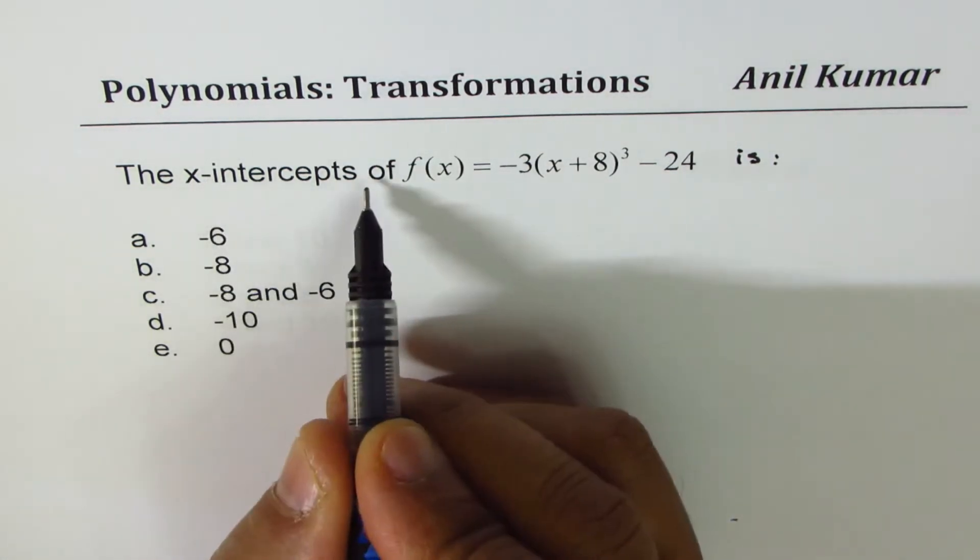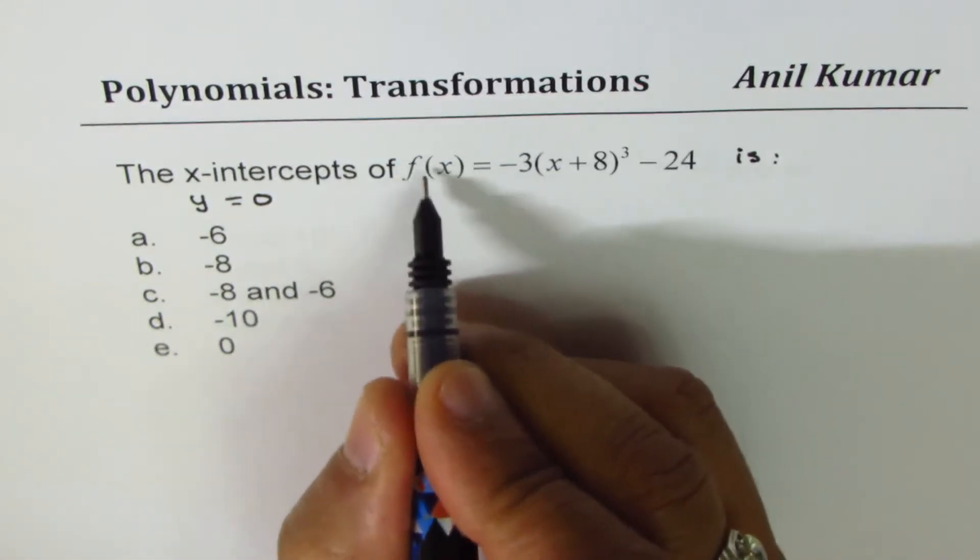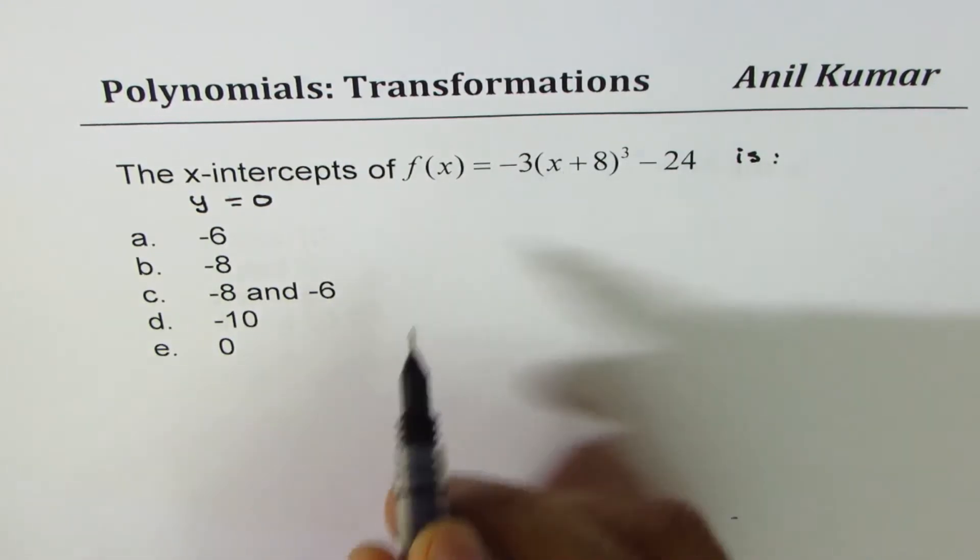So when we talk about x-intercept, that means the value of y is equal to 0. We'll make f(x) as 0 and solve for x. That's the whole concept.